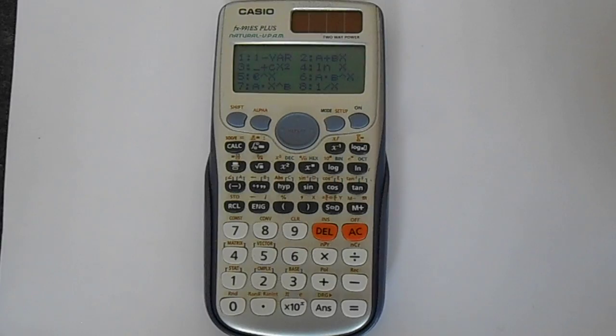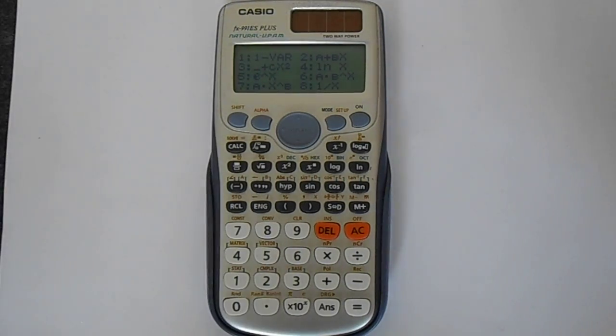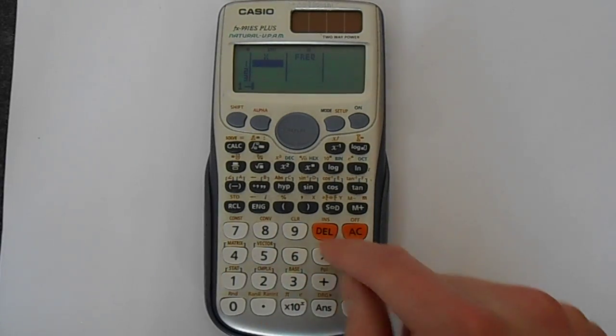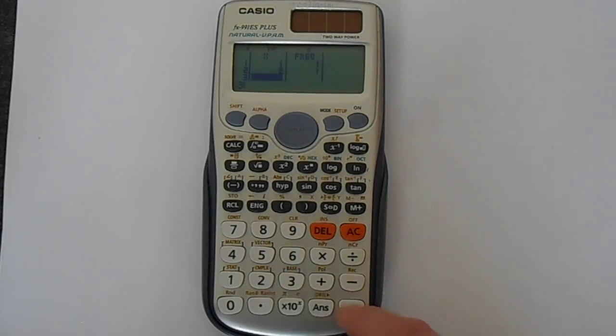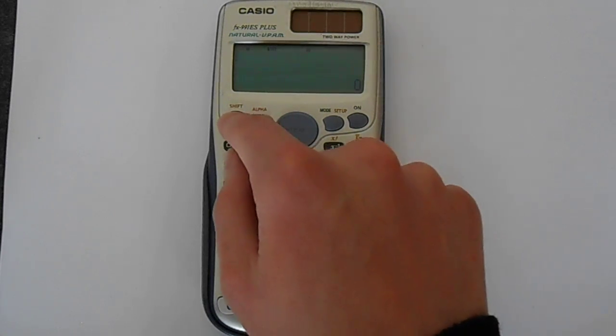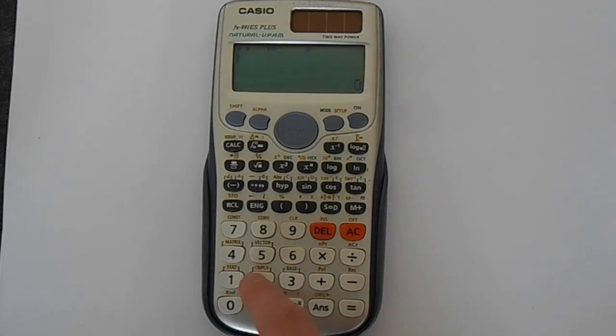So in linear regression, you can put in some data points and it will find the line of best fit. So let's just put, this is in statistics. We enter our data. The AC button saves in this calculator. Then if you press shift, you can get back into the mode.